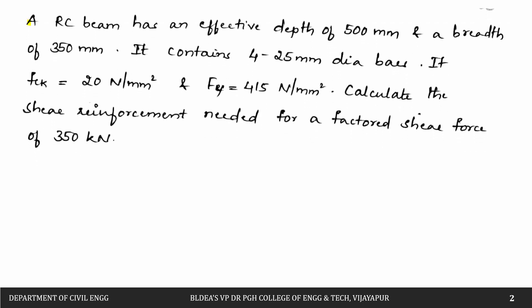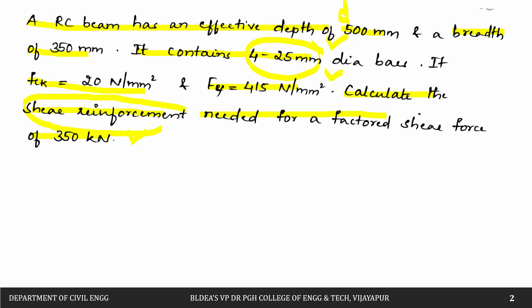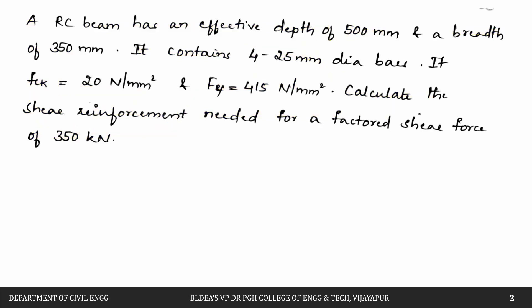Consider an RC beam with an effective depth d = 500 mm and breadth b = 350 mm. It contains 4 bars of 25 mm diameter. fck = 20 N/mm² and fy = 415 N/mm². Calculate the shear reinforcement needed for a factored shear force of 350 kN.